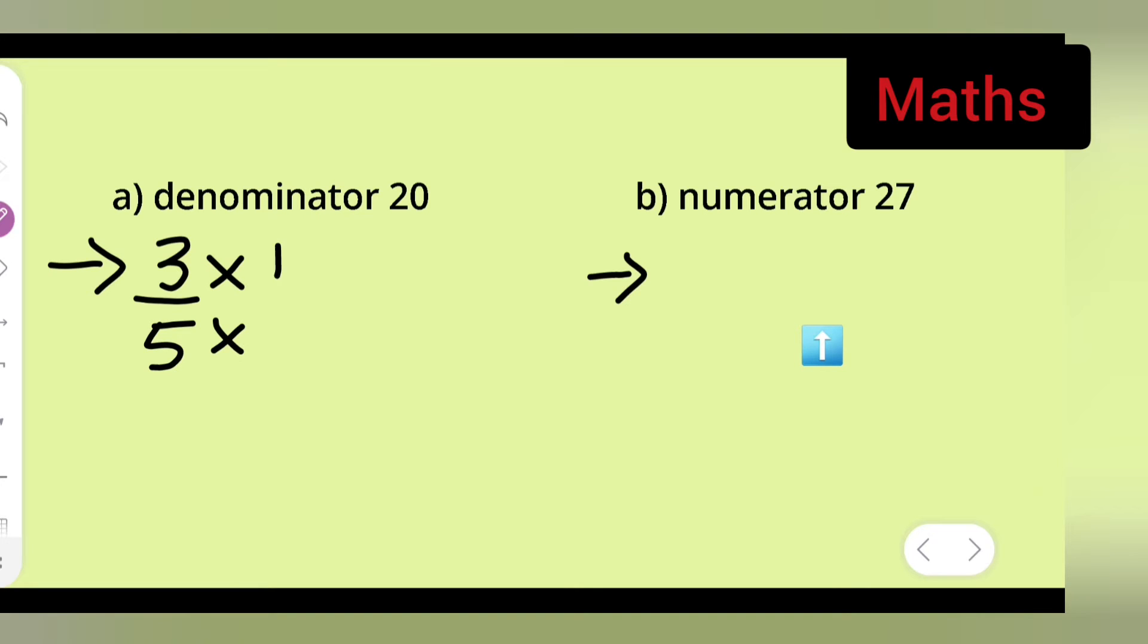So you have to multiply both numerator and denominator by 4. You will get 3 fours are 12 upon 5 fours are 20. You have to take such a number where you will get denominator to be 20.